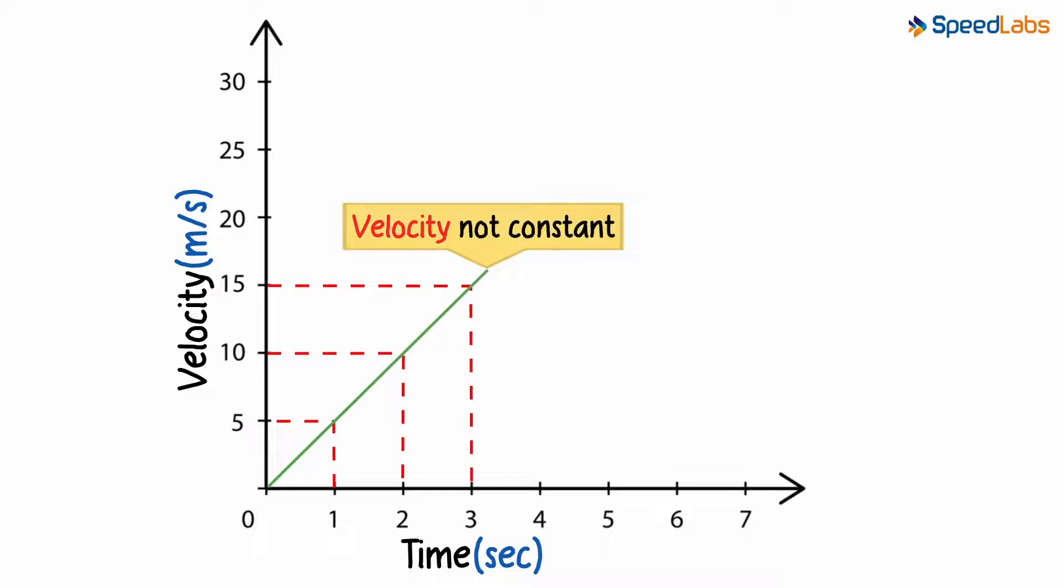Clearly, the velocity is not constant here. But can you tell me what's constant in this particular example? Yes, it's the acceleration. The change in velocity is constant in each time period. And because the acceleration is constant, what we have here is a straight line.